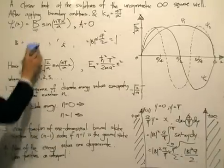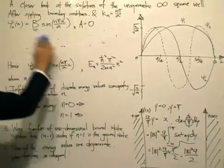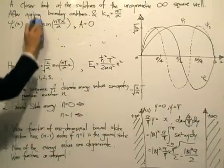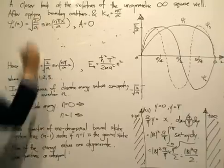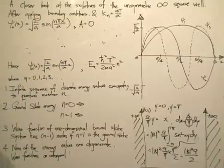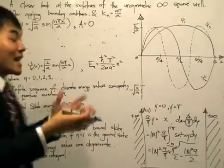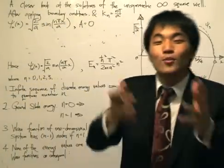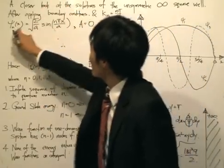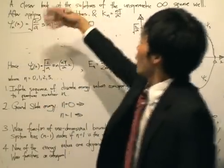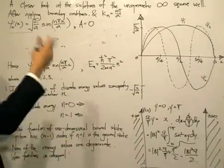So ultimately, the normalized solutions of the Schrödinger equation are ψ_n = √(2/a) · sin(nπx/a). This corresponds to solutions for discrete values of n: n = 1, 2, 3, and so on.